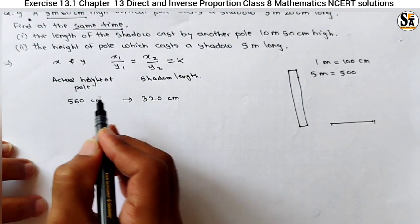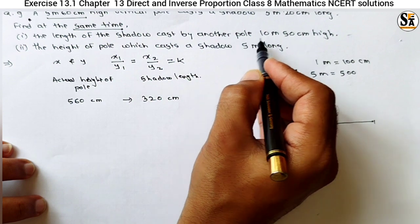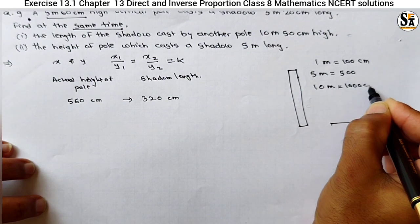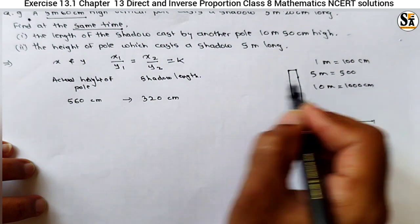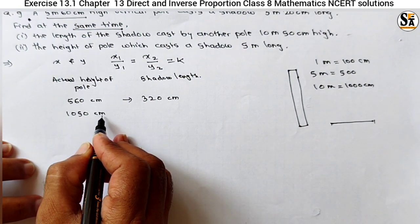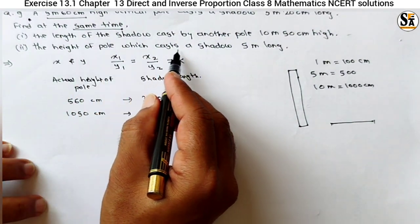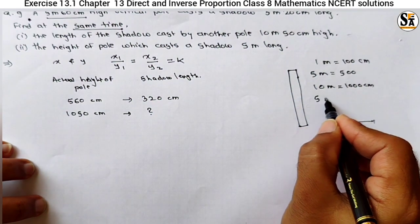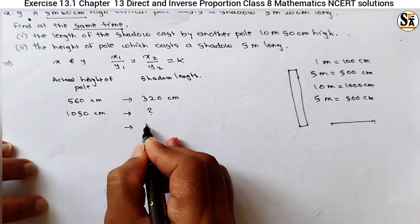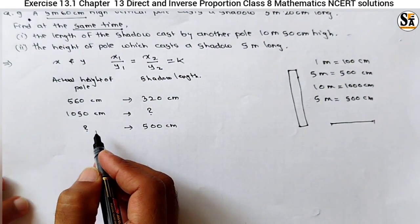This is the actual height of the pole and this is the shadow length. Now, what is asked? The length of shadow cast by another pole of 10m 50cm — 10m is 1000cm plus 50cm equals 1050cm. And the height of the pole which casts a shadow of 5m — 5m means 500cm. So I will write 500cm here. We have to calculate the actual height of that pole.